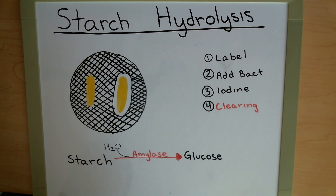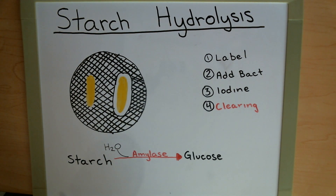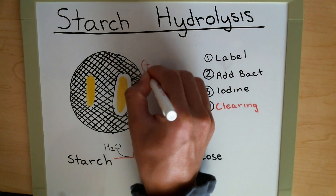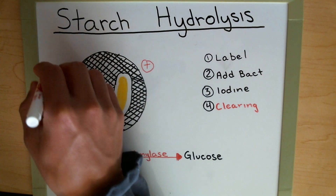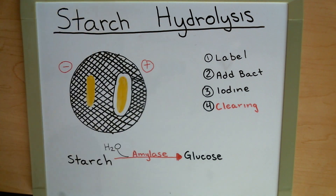The reason why there's no more starch around the bacteria is because it has broken down the starch in the immediate area, converted it to glucose, and taken it in order to grow. The bacteria without a clearing does not have the enzyme amylase, which means it is unable to break down starch into glucose. A clearing around the bacteria indicates a positive result, while no clearing indicates a negative result.